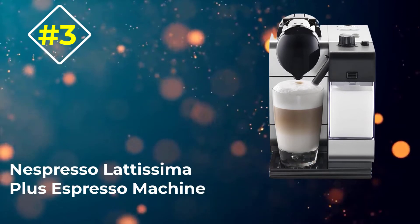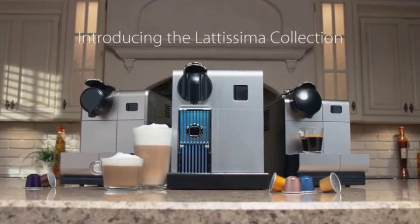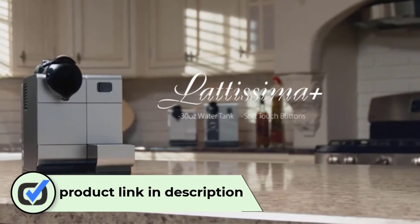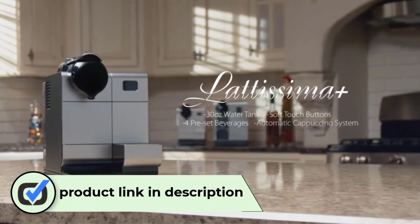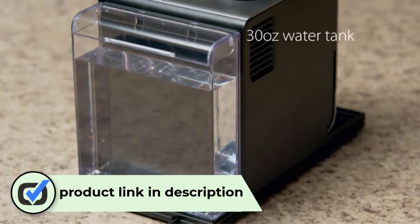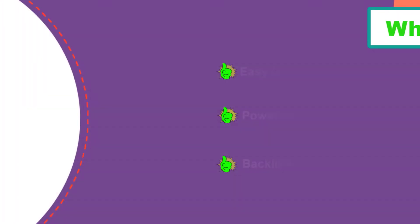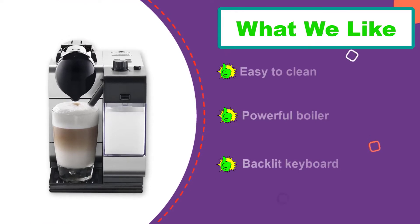Number 3. Nespresso Latissima Plus Espresso Machine. Next up is the Latissima Plus. This is a slightly higher-end choice, but we love it because it combines all the features of a great espresso machine with a milk wand. This will allow you to not only pull shots, but craft drinks such as lattes and cappuccinos. This machine uses Nespresso's original pods, and this makes it another good choice for traditionalists.